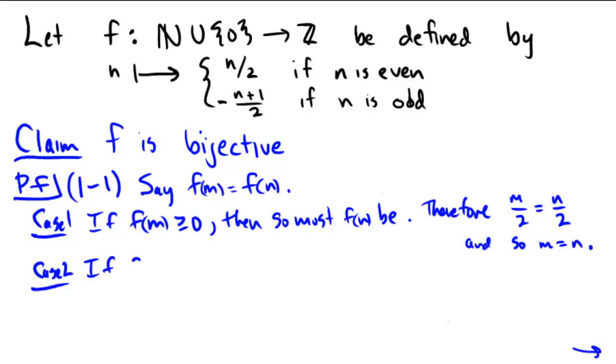Case 2: If f(m) happened to be less than 0, then so is f(n), and that must mean that both results came from the bottom branch. Then we would have that negative (m+1)/2 would be equal to negative (n+1)/2. If we multiply both sides by 2, we get negative m plus 1 equals negative n plus 1.